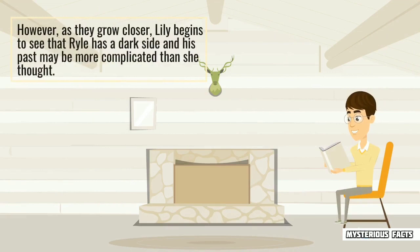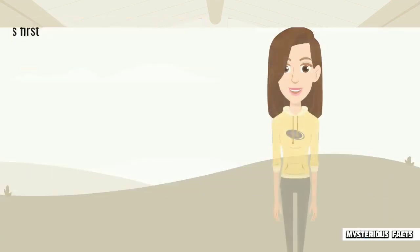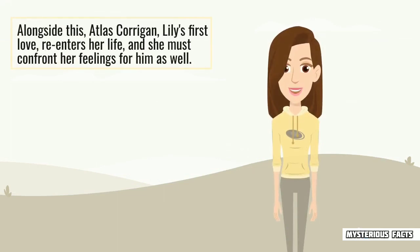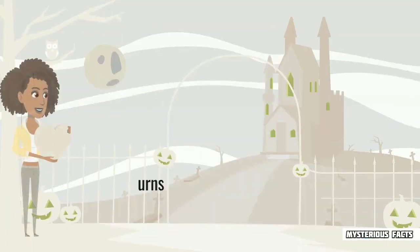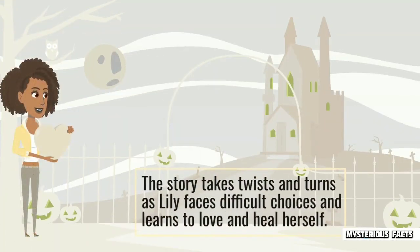However, as they grow closer, Lily begins to see that Ryle has a dark side and his past may be more complicated than she thought. Alongside this, Atlas Corrigan, Lily's first love, reenters her life, and she must confront her feelings for him as well. The story takes twists and turns as Lily faces difficult choices and learns to love and heal herself.